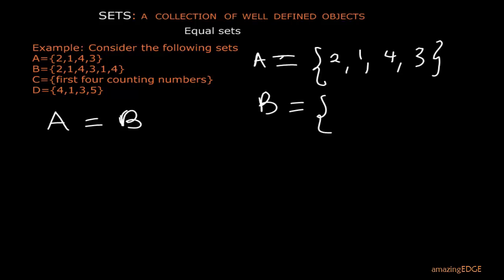So this set B, we are going to rewrite this. So this set B is the same thing as writing 2, 1, 4, 3. Now, what you observe, we are not going to write 1 and 4 again because we have already written it. So if we write, it becomes a repetition.